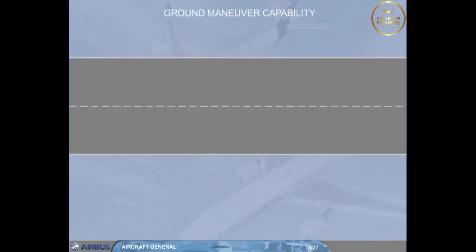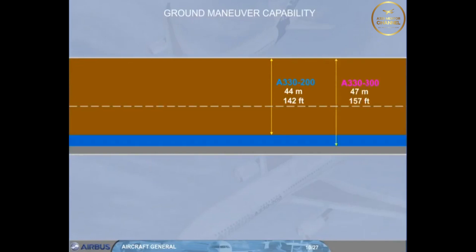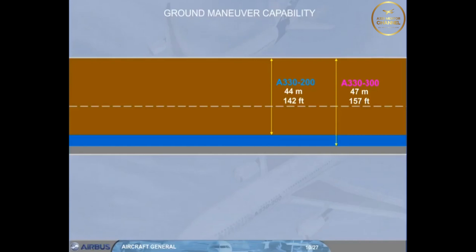The minimum pavement width for a 180-degree turn with symmetric thrust and no braking is 44 meters (142 feet) for the A330-200, and 47 meters (157 feet) for the A330-300, based on a maximum steering limit of 72 degrees.